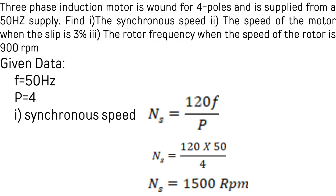Consider another problem: a three-phase induction motor is wound for four poles and is supplied from a 50 Hz supply. Find the synchronous speed, the speed of the motor when the slip is 3%, and the rotor frequency when the speed of the rotor is 900 rpm. Using Ns = 120f/P, with frequency 50 Hz and poles 4, we get Ns = 1500 rpm.